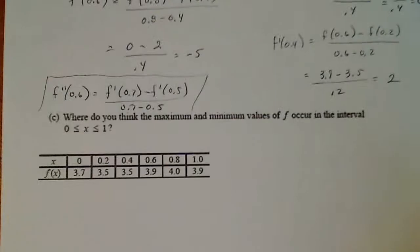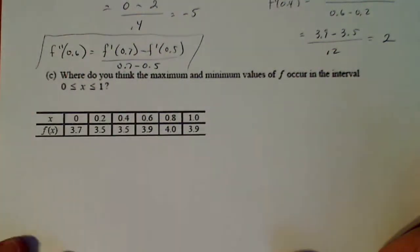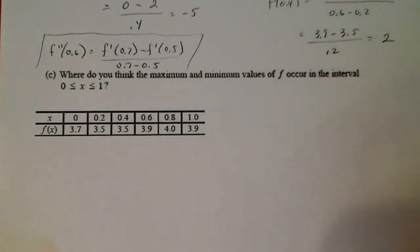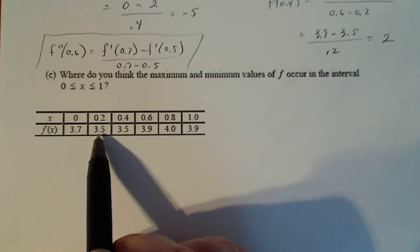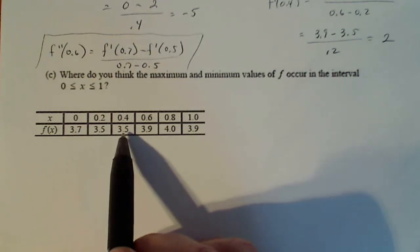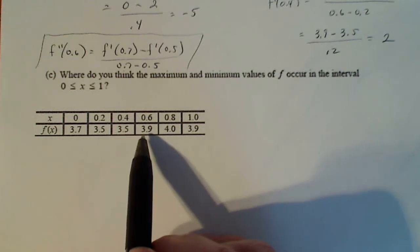Now part C says, where do you think the maximums and minimum values of f occur in the interval from 0 to 1? So when I look here, I see a goal from 3.7 down to 3.5. I stay on 3.5 and I go back up to 3.9.